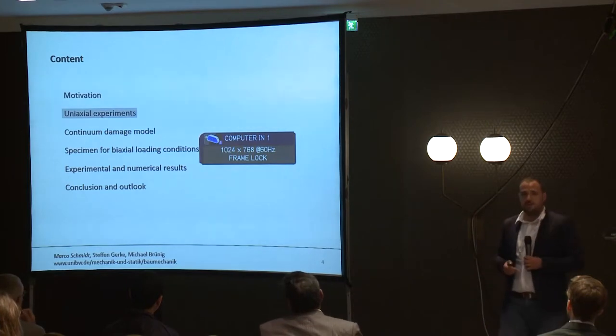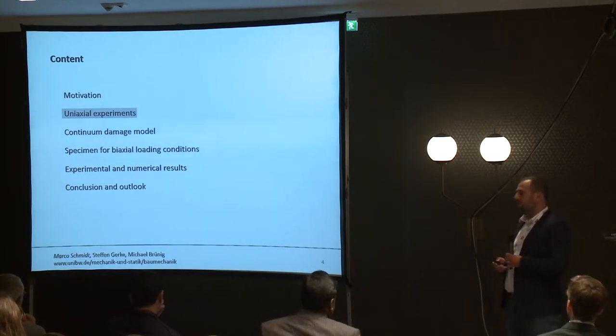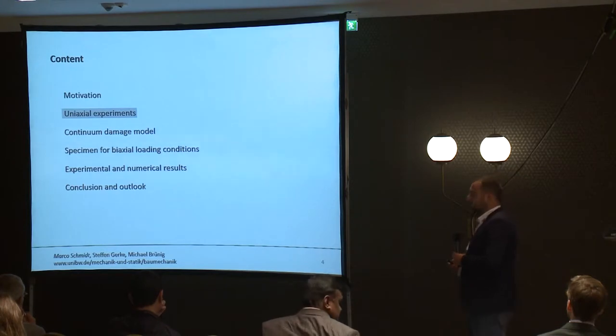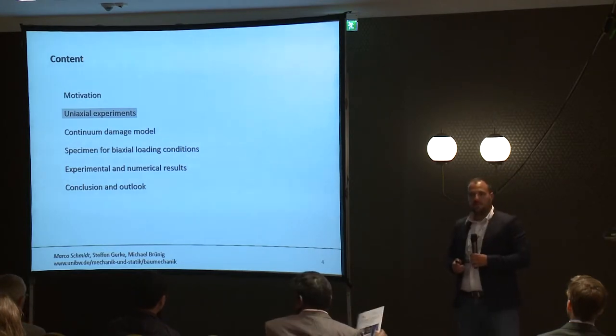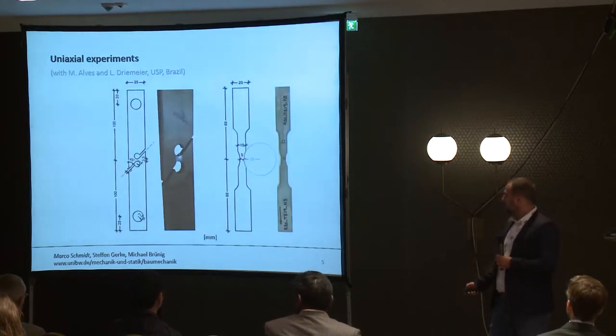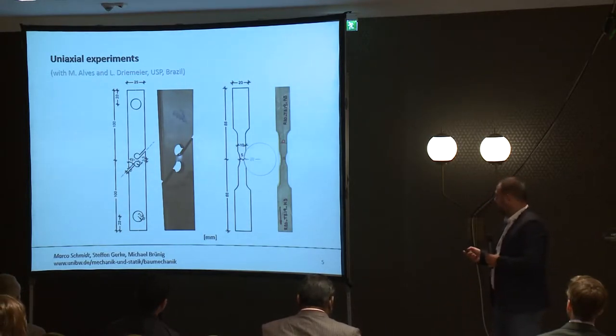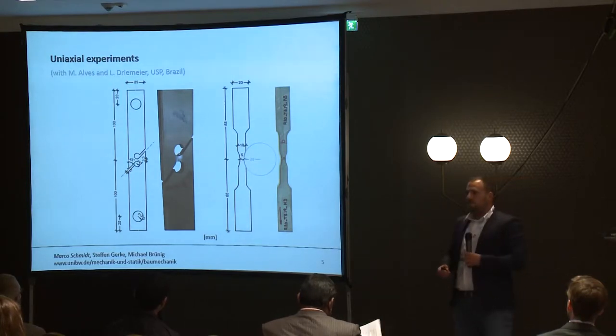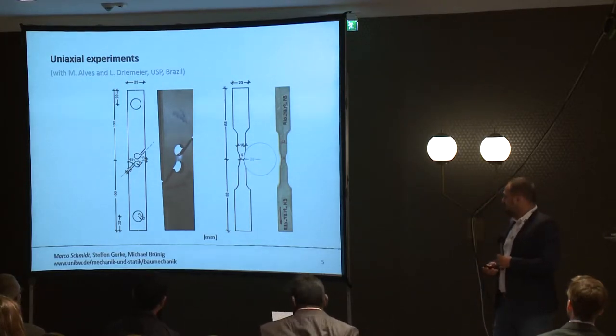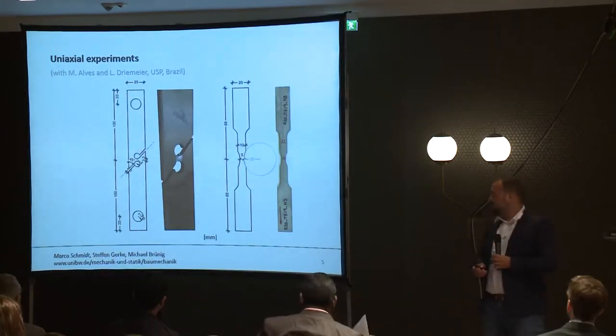The first experiments to investigate the influence of stress triaxiality were uniaxial experiments, which is why I want to discuss some of them. On the right side, you can see a general notched tensile bar. With different notch radii, you get different stress states in the center. The smaller the radius, the higher is the isotropic proportion.